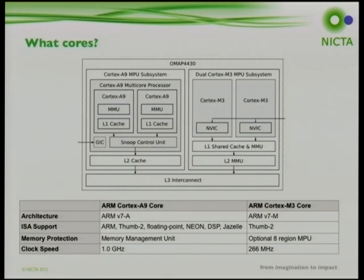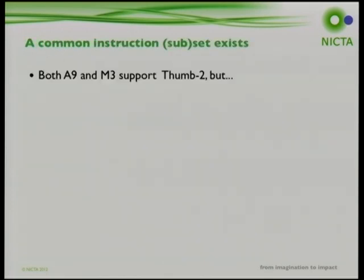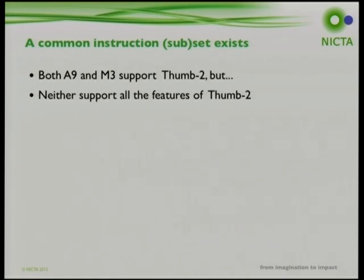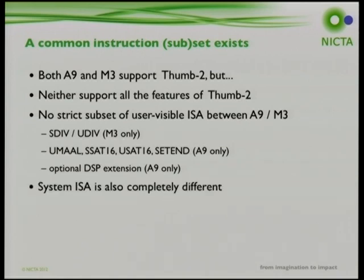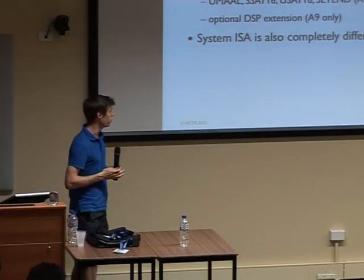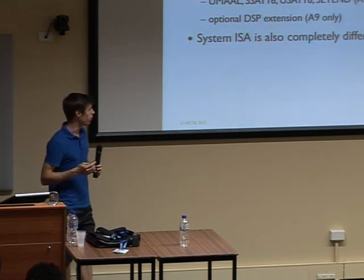While both implement a common subset of Thumb2, neither implements the full Thumb2 ISA. The M3 has special division instructions for improved integer arithmetic, while the A9 has instructions the M3 doesn't implement, plus an optional floating point unit and DSP extensions. The system instructions used to manage caches, interrupts, and other system functions are completely different between the two processors.